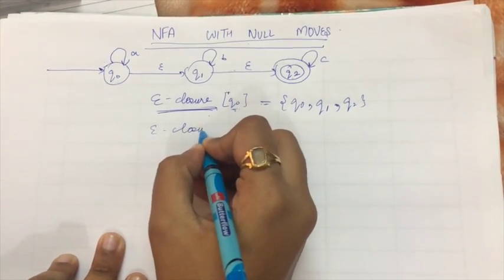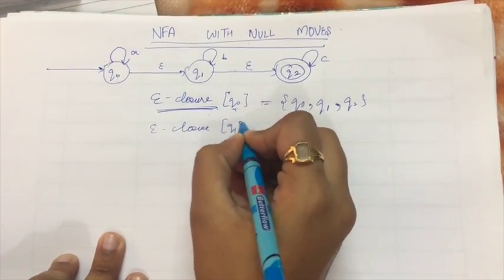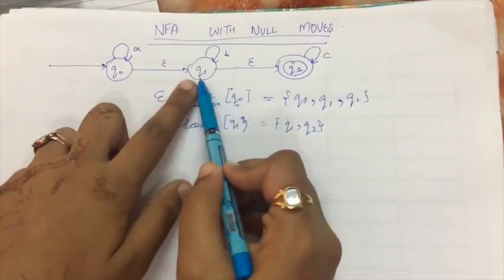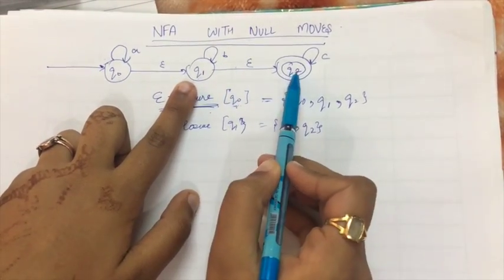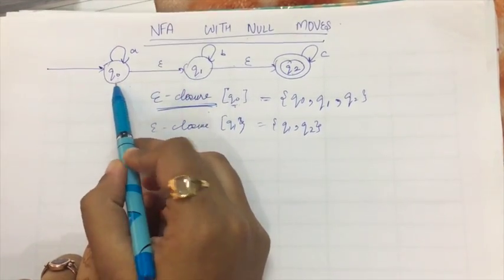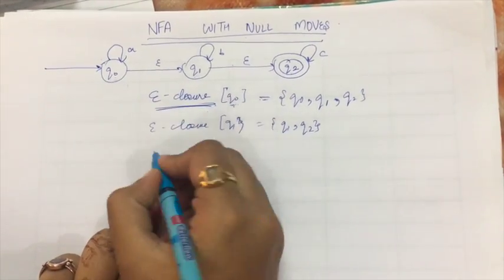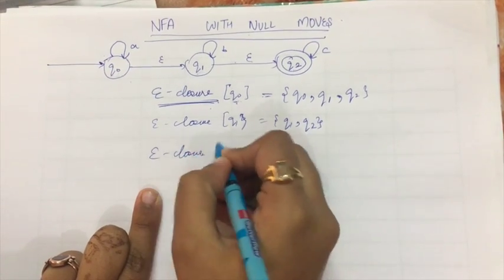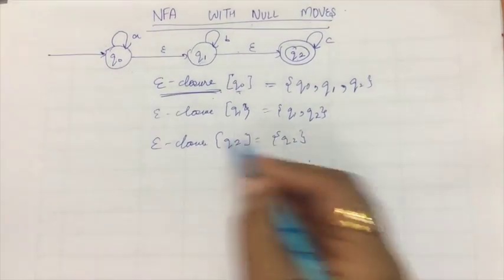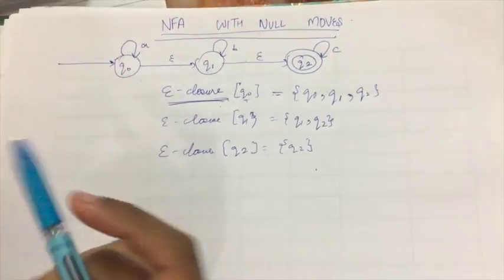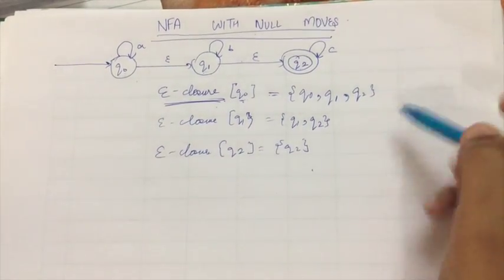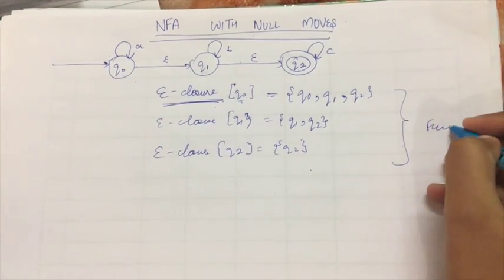The null closure of Q1 will be equal to Q1 and Q2, because we go from Q1 to Q2 using null. We cannot go back since there is no arrow pointing from Q1 to Q0. Similarly, the closure of Q2 will equal just Q2. This means when we make an NFA without null moves, we will have these three states, and all three are final states.